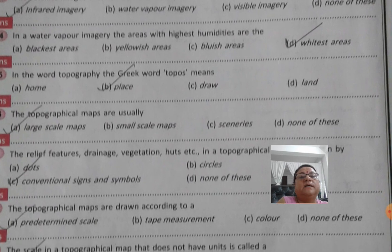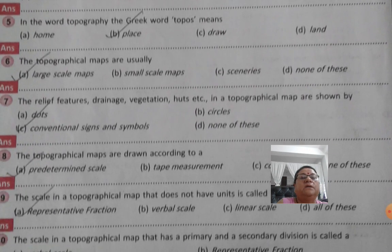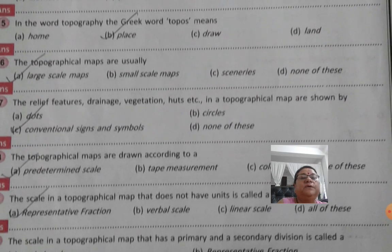Then comes another question. The topographical maps are shown in the word topography. The Greek word topos means of place. The topographical maps are used usually large scale map.